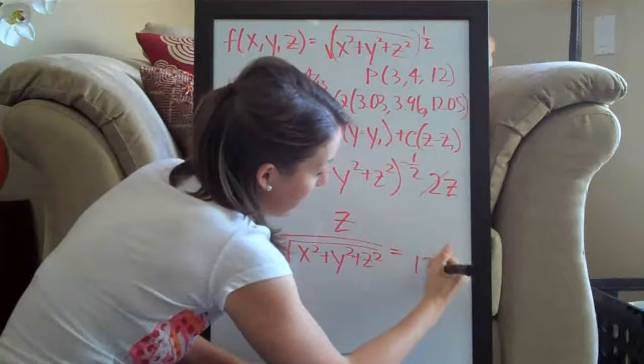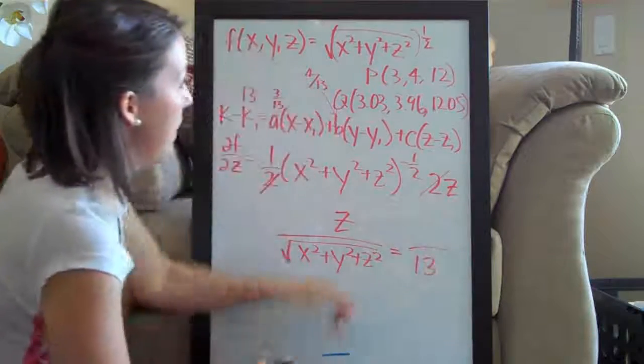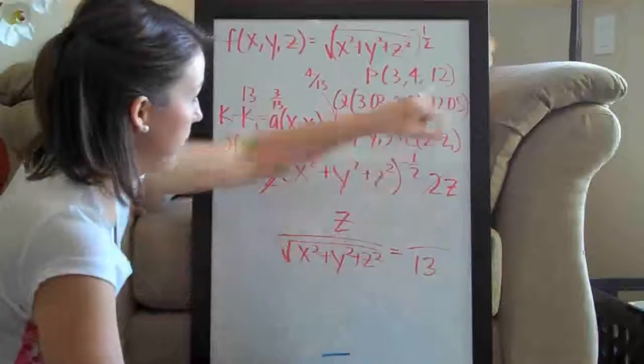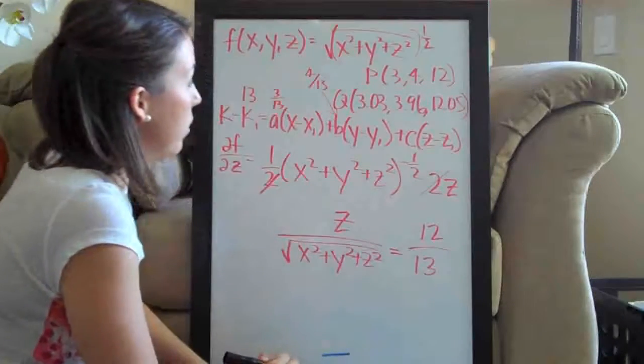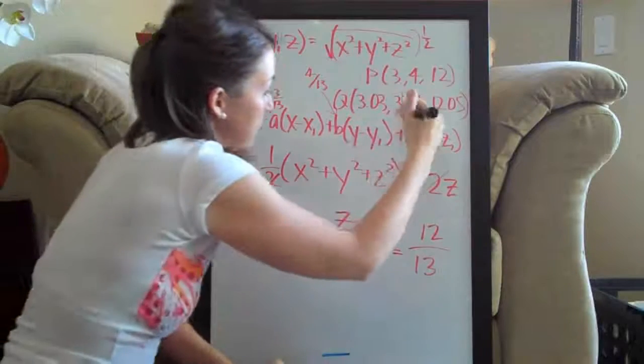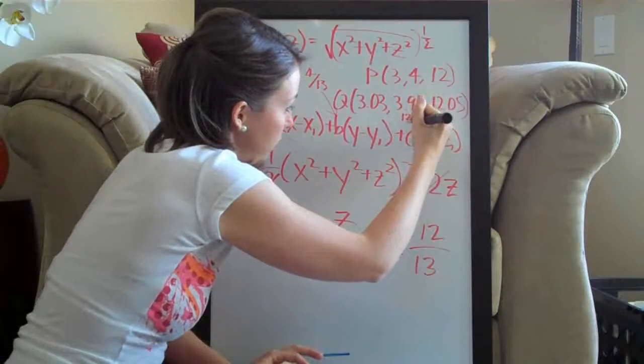We know that the bottom is thirteen, and the top here we plug in twelve for z, so we know that the top is twelve. So c right here is going to be twelve over thirteen.